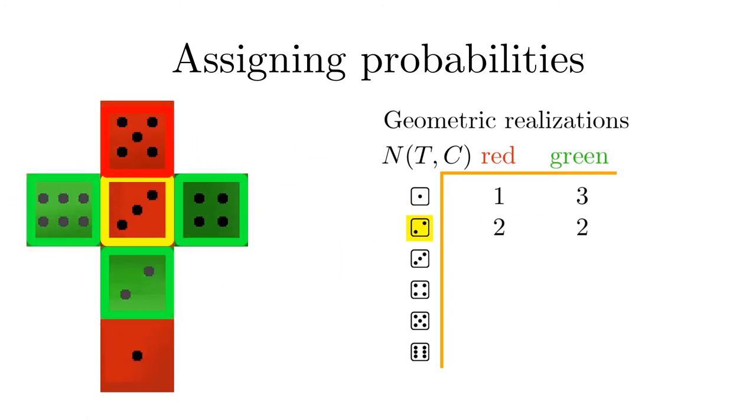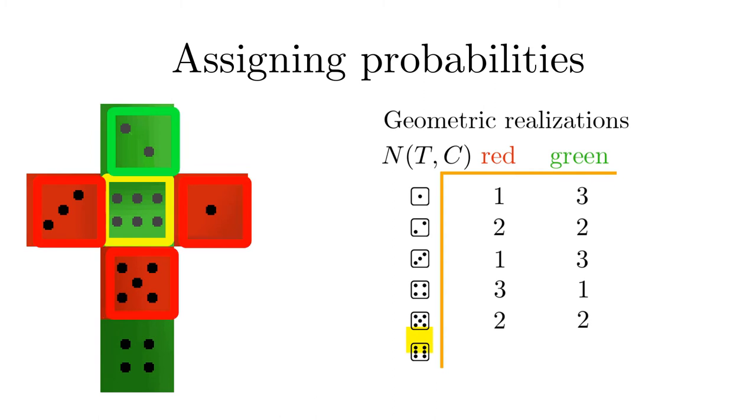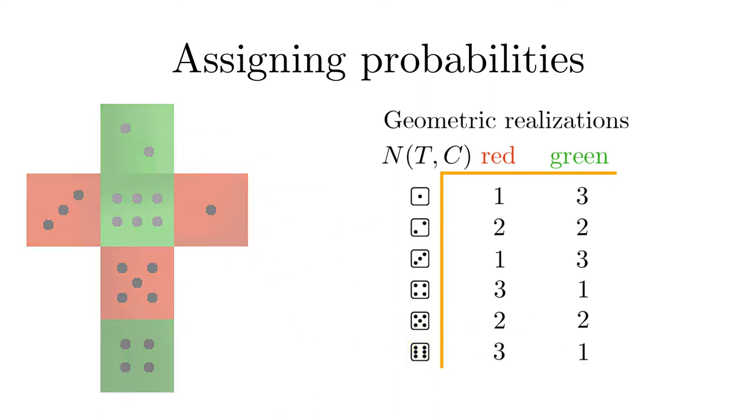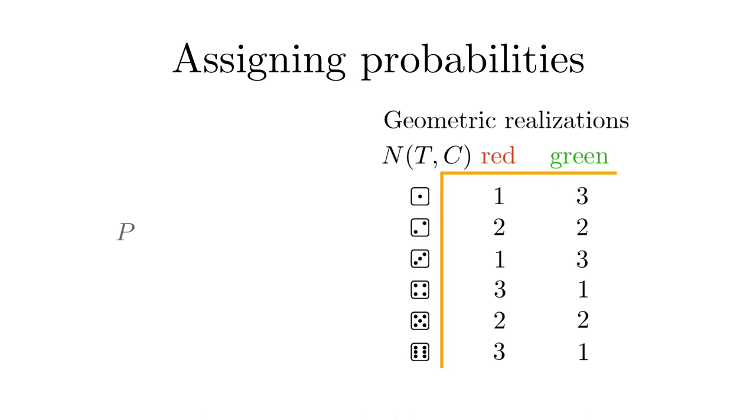Similarly, we proceed with the other values of the top pips, two, three, four, five, and six, and obtain the following table. According to the principle of indifference, all geometric realizations are equally probable, and therefore the classical assignment of probability for a pair, top pips, front color, is given by the number of favorable geometric realizations, which are the numbers in the table, divided by the total number of geometric realizations, which is twenty-four.